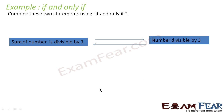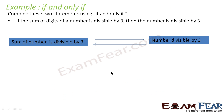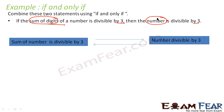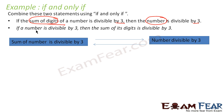Let's take one more example. We have to combine these two statements using 'if and only if.' The statement says: if the sum of the digits of the number is divisible by 3, then the number is divisible by 3. Similarly, the other way around: if the number is divisible by 3, then the sum of its digits is also divisible by 3.